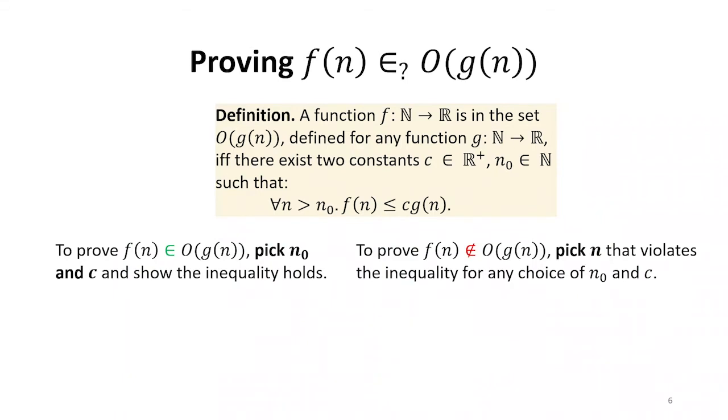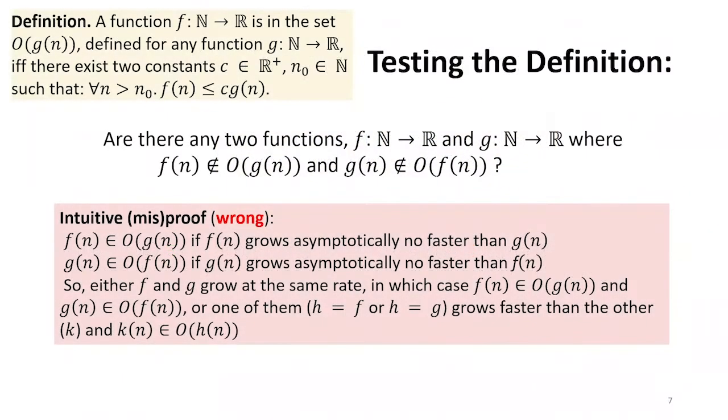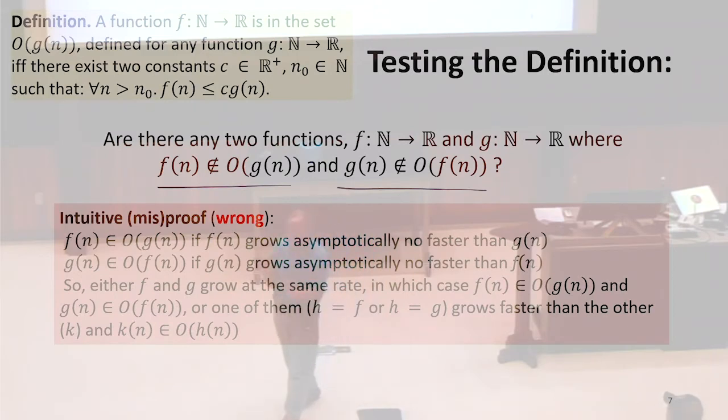Let's test this definition. And this, I think, gets at this question of what would happen if we just tried to flip the inequality. So are there any two functions? Two functions, f and g. And the question is, is it ever the case that we can find two functions where f is not in big O, g of n, and g is not in big O of f? So if we think of the definition being flipping the inequality, that should be, our intuition would say that's not the case.